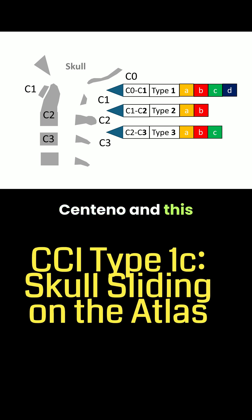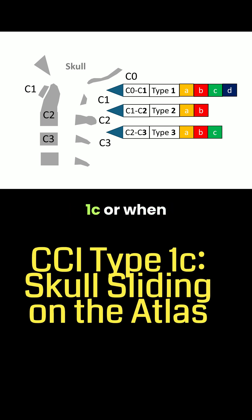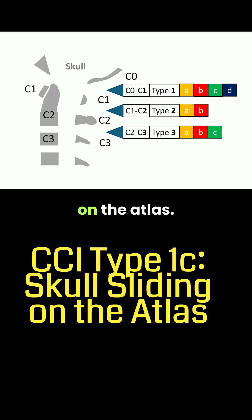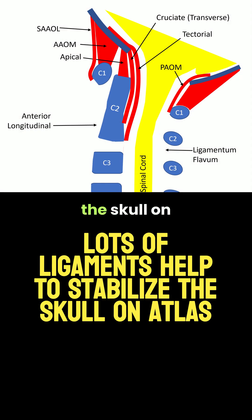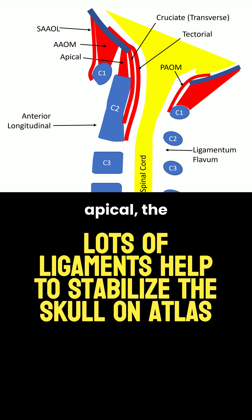Hi, this is CCI Type 1c, or when the skull slides on the atlas. Lots of ligaments help stabilize the skull on the atlas: the SAOL, AOM, apical, the tectorial membrane, the PAOM — quite a few.